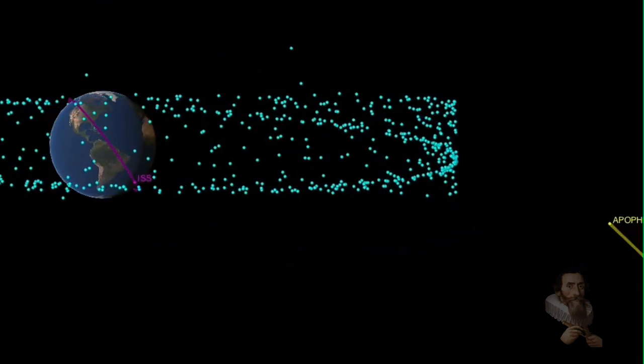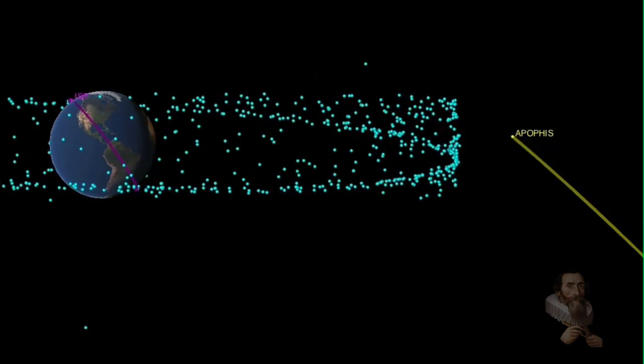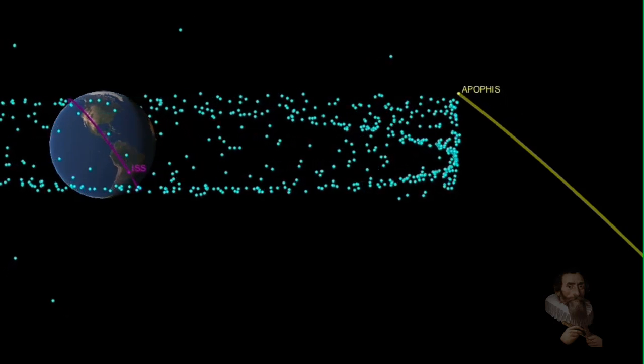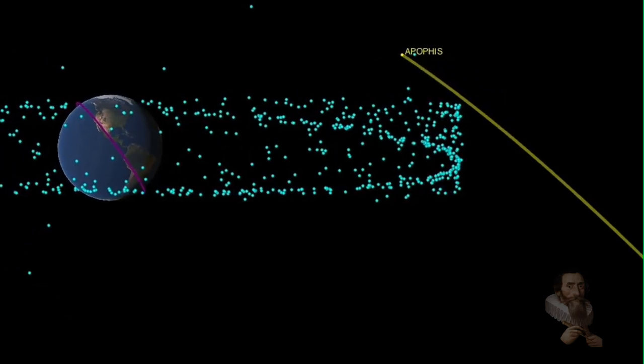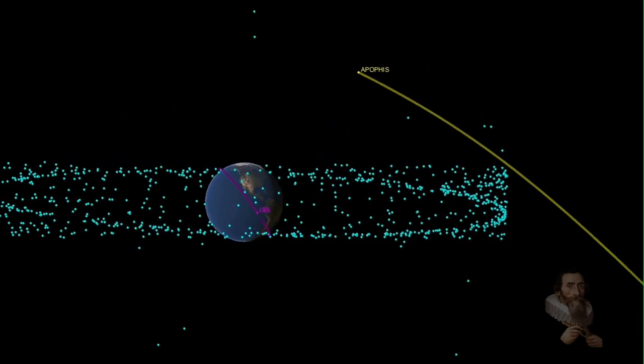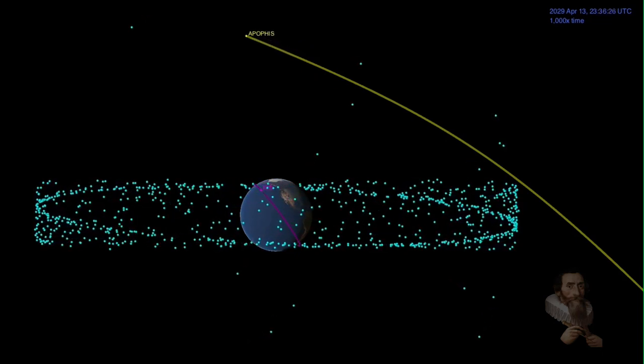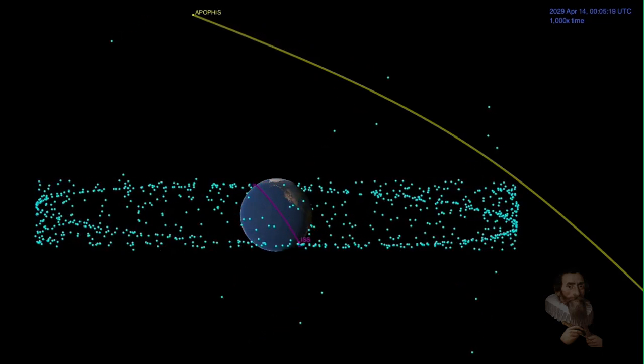But nonetheless, governments are mobilizing all around the world. China, Japan, Russia, India, Europe and the UK are all developing solutions for asteroid scenarios should their trajectories become Earth-facing. The most promising is the American Double Asteroid Redirect Test, which will begin practice operations in October 2022.